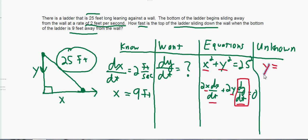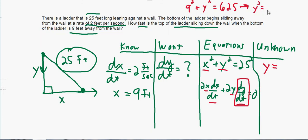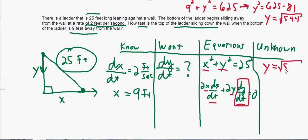Our job becomes finding y so we can plug it in and solve for dy/dt. We use the Pythagorean theorem equation: 9² + y² = 25², which is 625. So y² = 625 − 81 = 544, meaning y equals the square root of 544. It doesn't matter if that's a nice number — we just leave it like that. Now that we know y, we know all of x, dx/dt, and y, so we can find dy/dt.